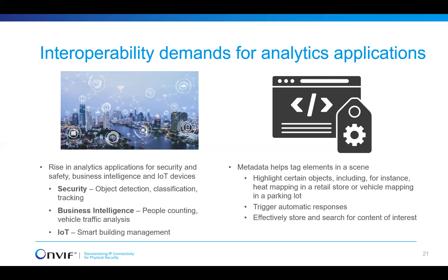All those applications and sensors generate a huge amount of data. Coming from the video industry, we generate a lot of video and there is no way to watch every single frame to understand what's going on in a scene. To make it more efficient, there is the concept of metadata, which helps tag different elements in the scene. Metadata is data describing other data — such as video — explaining different objects and their parameters with tags. It also helps trigger automatic responses and effectively store and search content of interest.